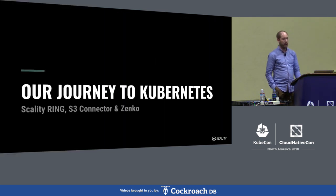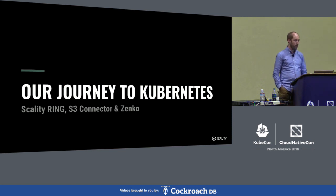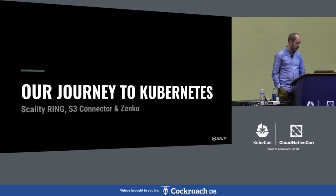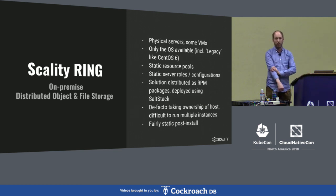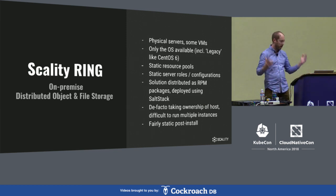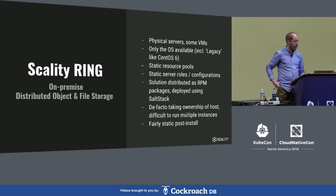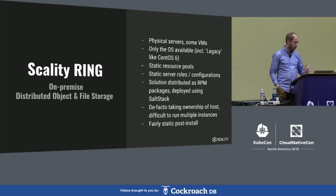Our journey towards Kubernetes — I'll sketch a bit the history of the company and the various products we have, and how we ended up with Kubernetes today, or about a year ago actually. Everything started with our product called Scality Ring, which is an on-premise, large-scale, multi-petabyte storage solution for both objects as well as file, where the file part is basically built on top of the object storage.